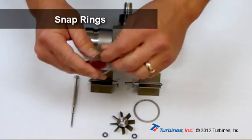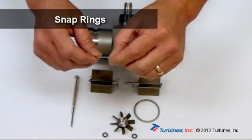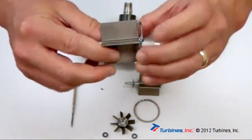The snap rings have a couple of purposes. First and foremost, they hold the internals into the housing. Secondly, they serve for anti-rotation so that the internals cannot turn once they are located inside the housing.